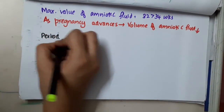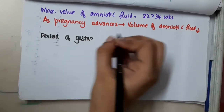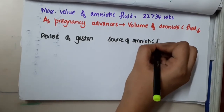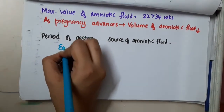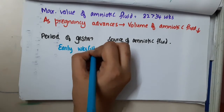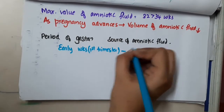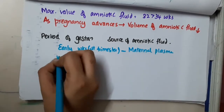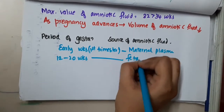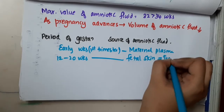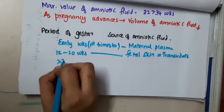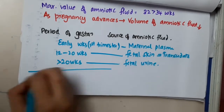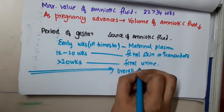Regarding period of gestation and source of amniotic fluid: in the first trimester, the source is mainly maternal plasma. At 12 to 20 weeks, it is from fetal skin as a transudate. For more than 20 weeks, the source of amniotic fluid is fetal urine, and overall the main source is fetal urine.